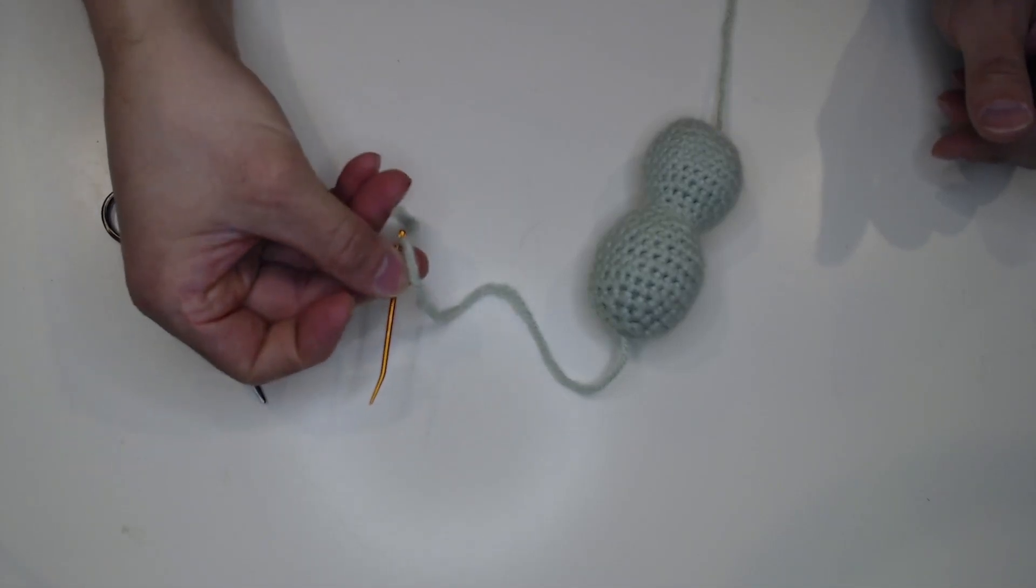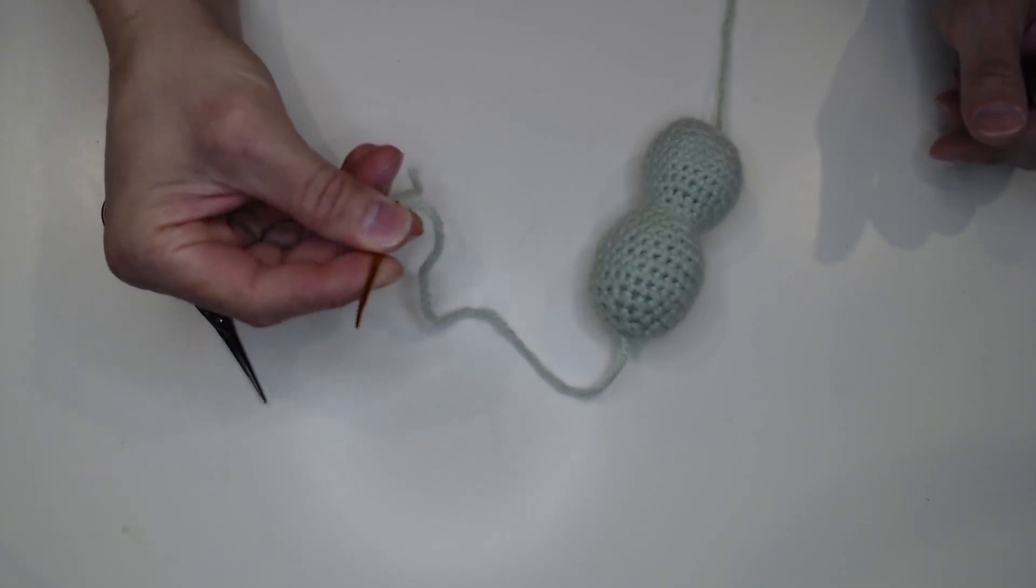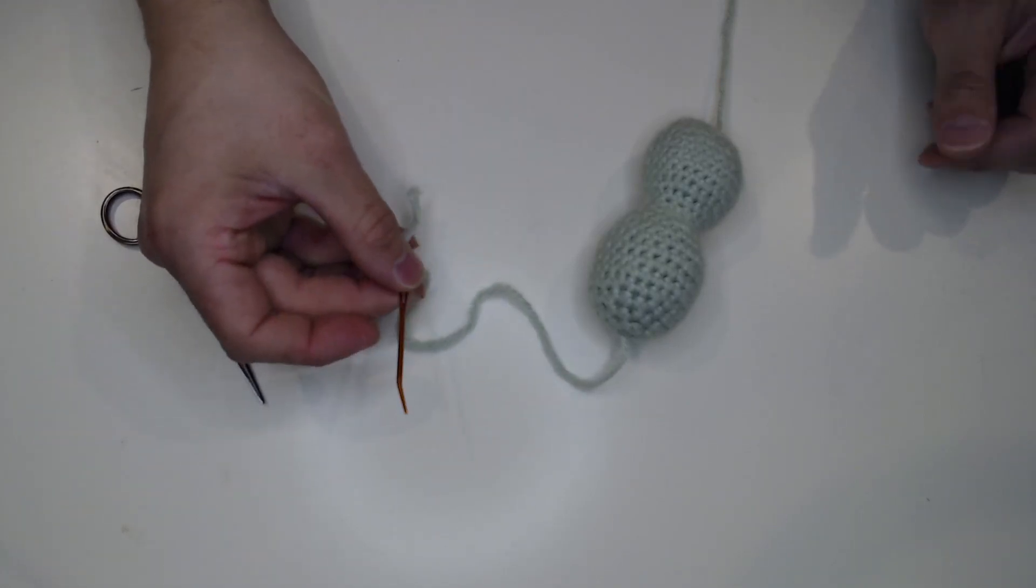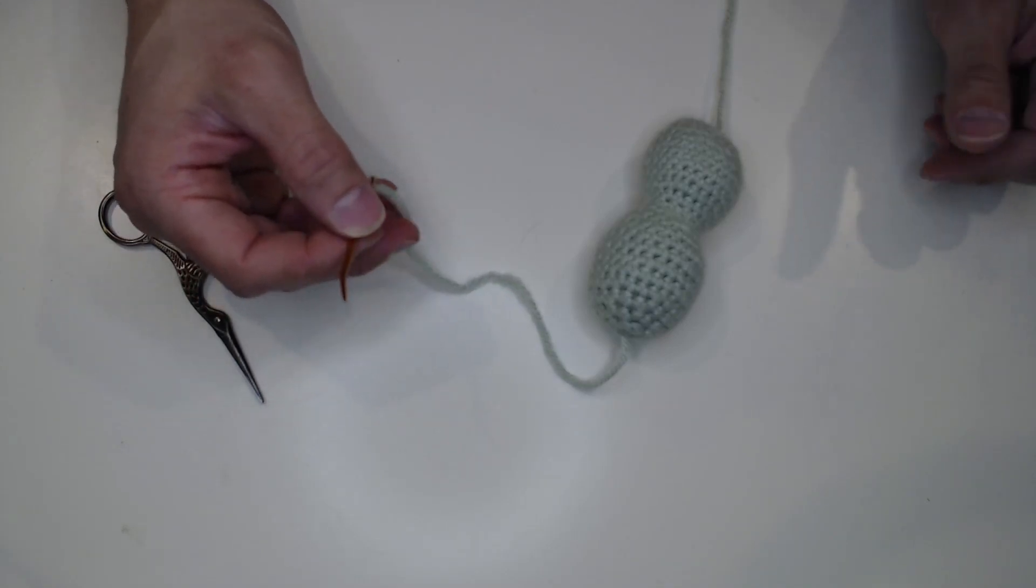It's nice to have a darning needle. I get a metal one. I would not get a plastic one just because it bends and it can break easily. So a nice metal one. These again are a couple bucks. You'll buy ten on Amazon.